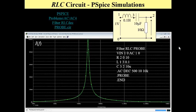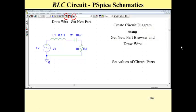Now let me show you how to operate schematics, how to prepare a netlist in the schematics version. At first, we have to draw a circuit diagram using the Get New Part browser and Draw Wire. Then we have to set values of all circuit parts, like here, they're already set.